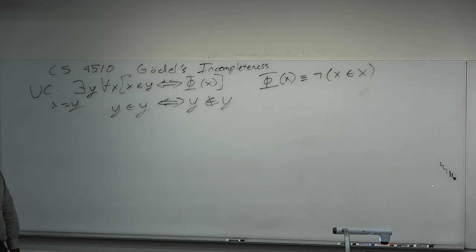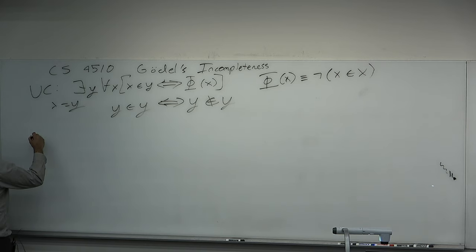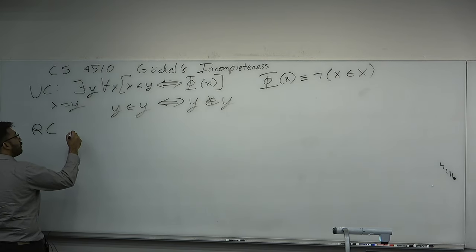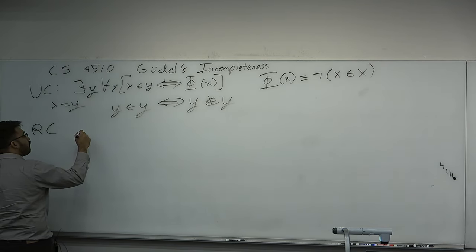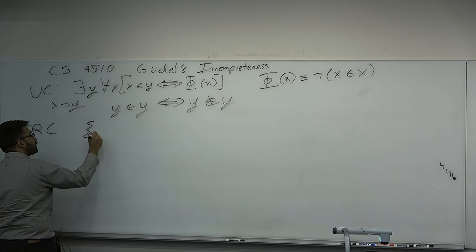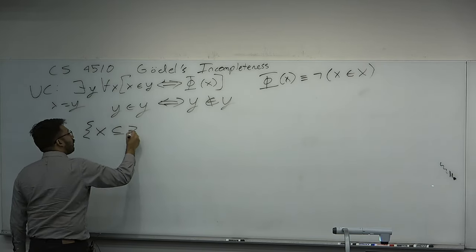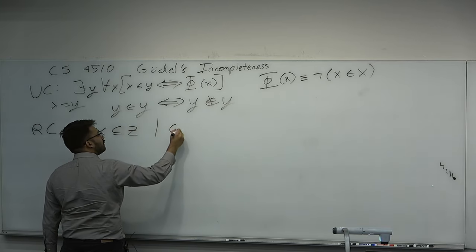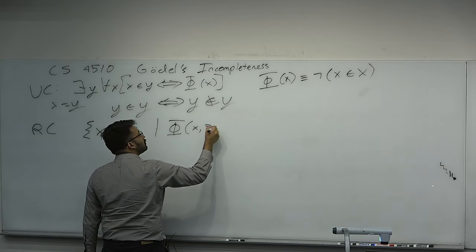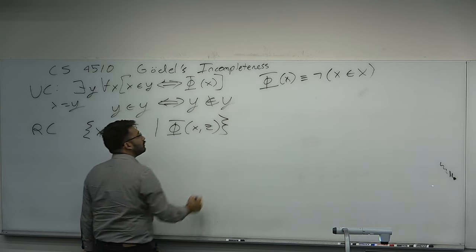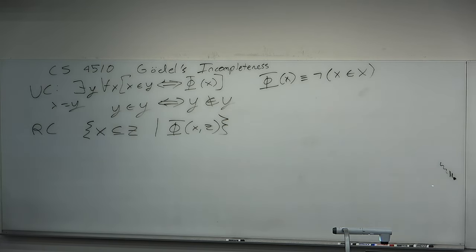This was a big upset to Frege and other formalists who spent several years trying to cope. The better way is with something called restricted comprehension: we only allow you to comprehend over subsets that have already been defined. For a previously known subset z, you may quantify some of its subsets according to a predicate. This on the surface appears to avoid self-referential statements such as Russell's paradox.